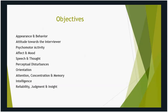The first slide covers the objectives: the appearance and behavior of the patient — you can extrapolate this to anybody, including family or someone in your social network. The objectives include attitude towards the interviewer, psychomotor activity (agitation or retardation), affect and mood (which are different), speech and thought (how somebody processes their thoughts), perceptual disturbances, orientation, attention, concentration and memory, intelligence, and finally reliability, judgment, and insight.